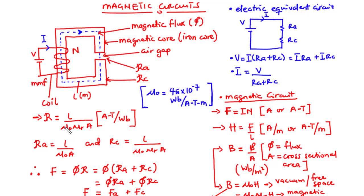The reluctance of the circuit is given as L divided by μ₀ × μᵣ × A, where L is the length of the magnetic circuit and A is the cross-sectional area. The reluctance of the air gap is given as L over μ₀ × A, while the reluctance of the iron core is given as L over μ₀ × μᵣ × A.